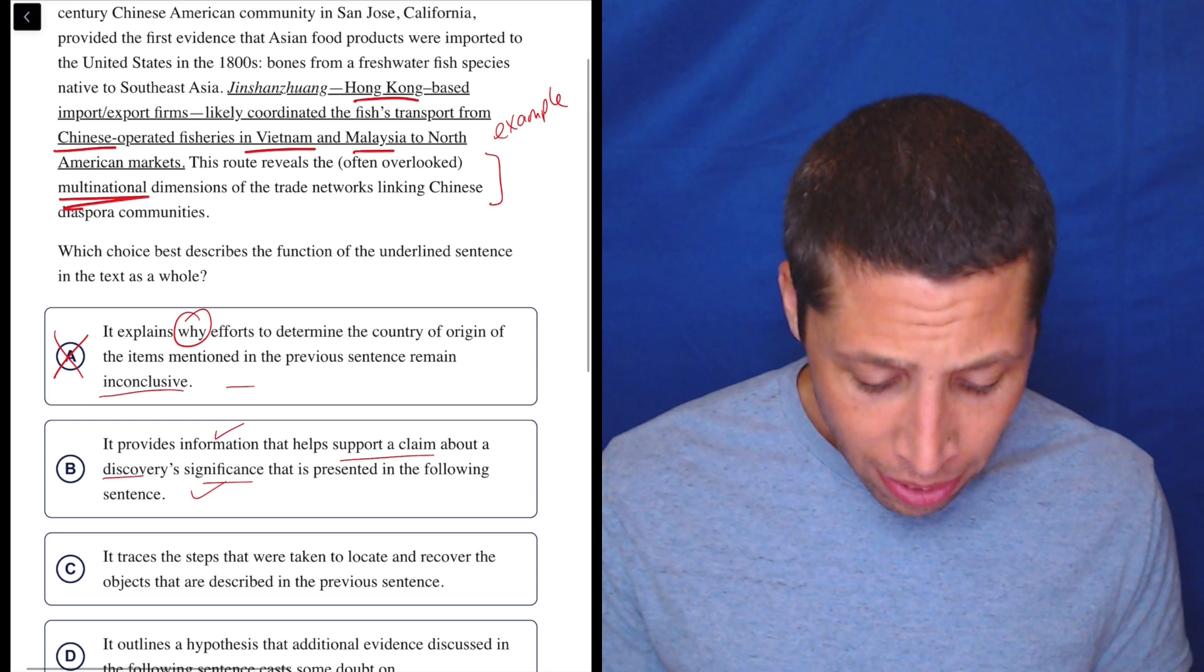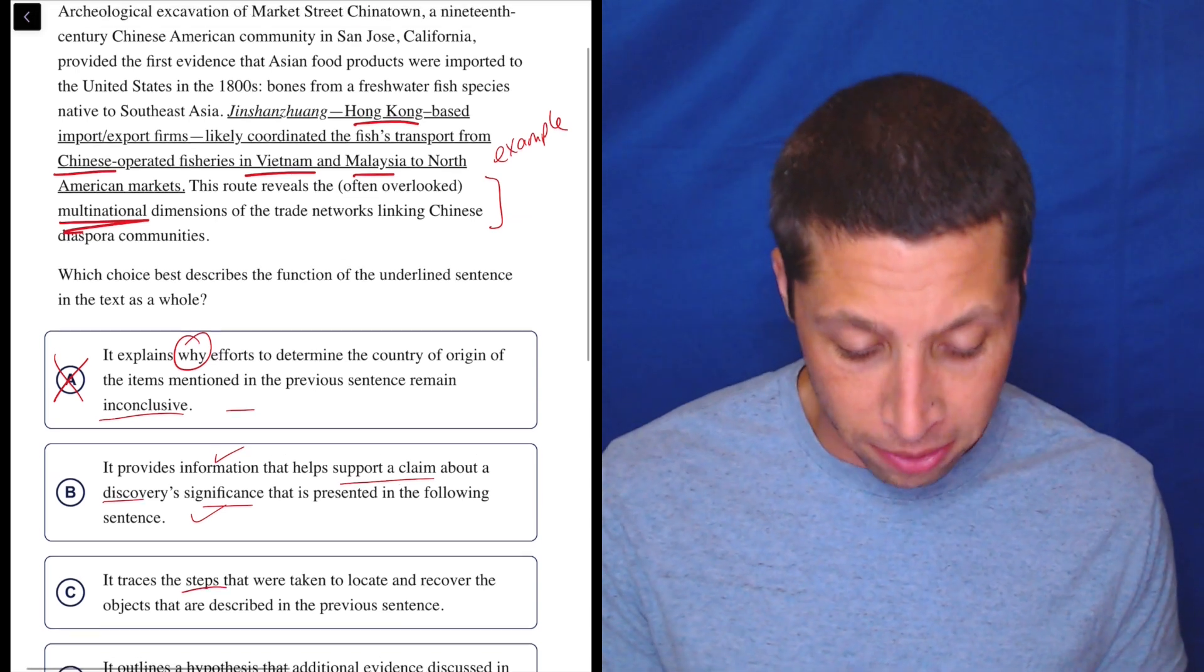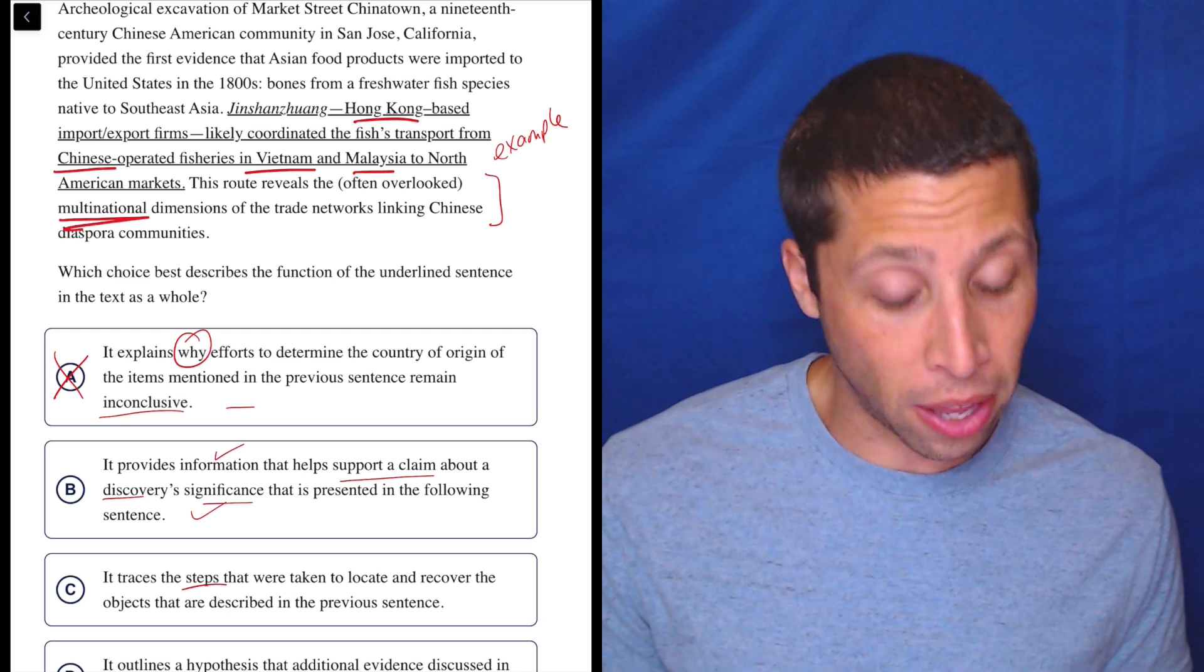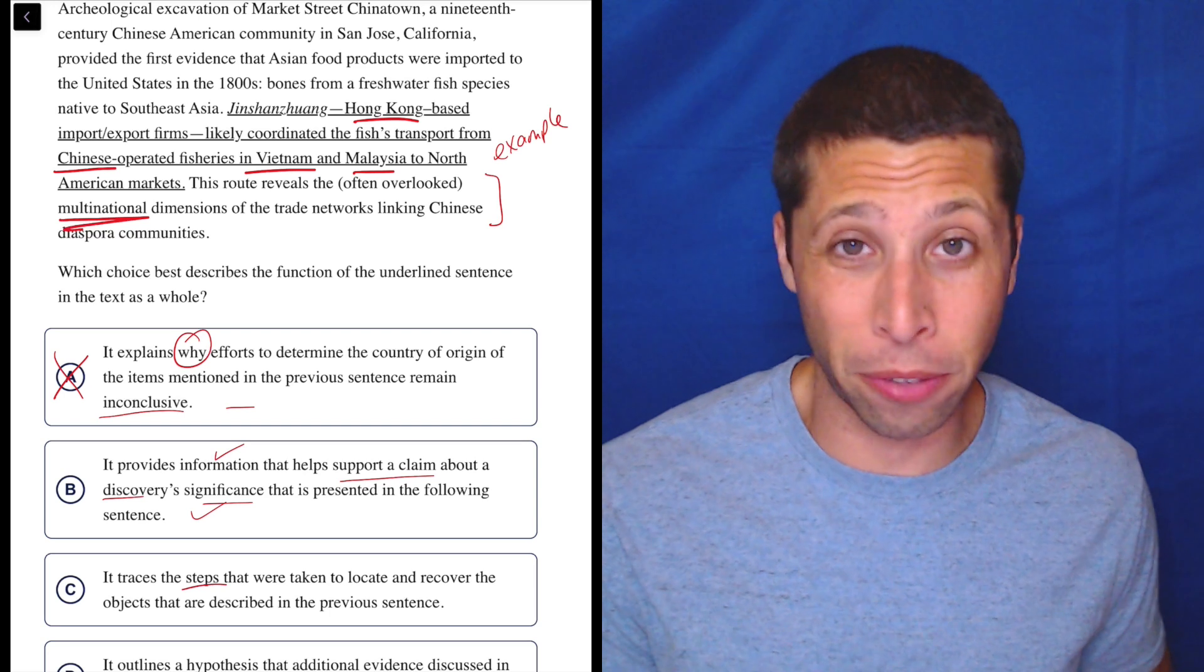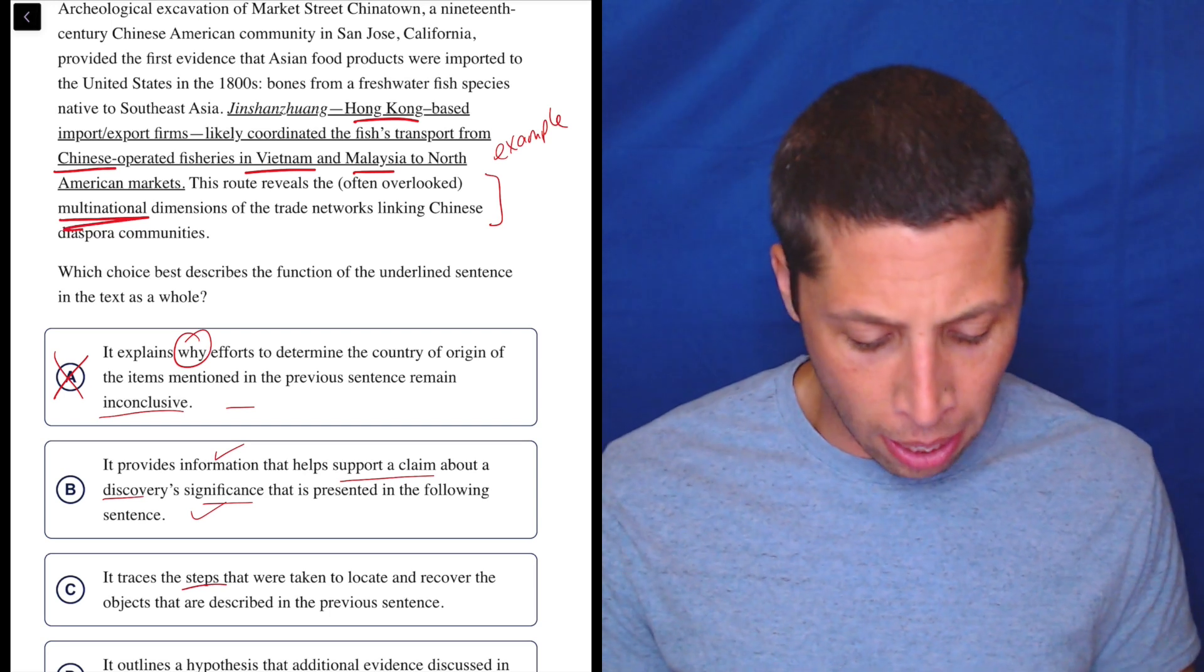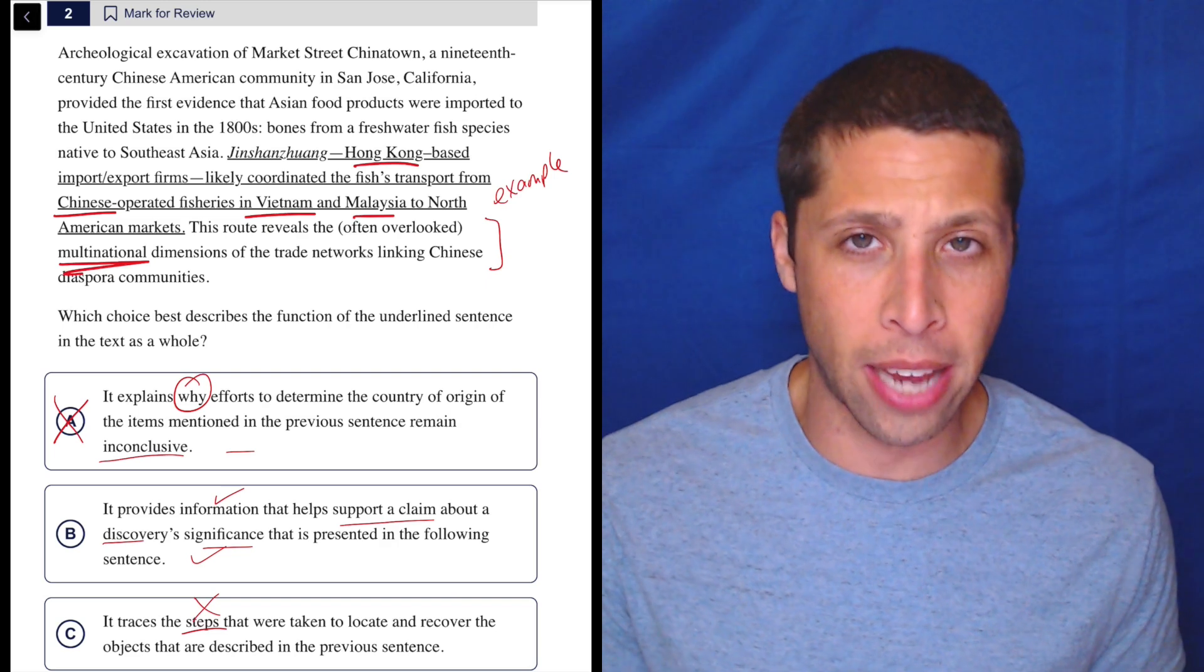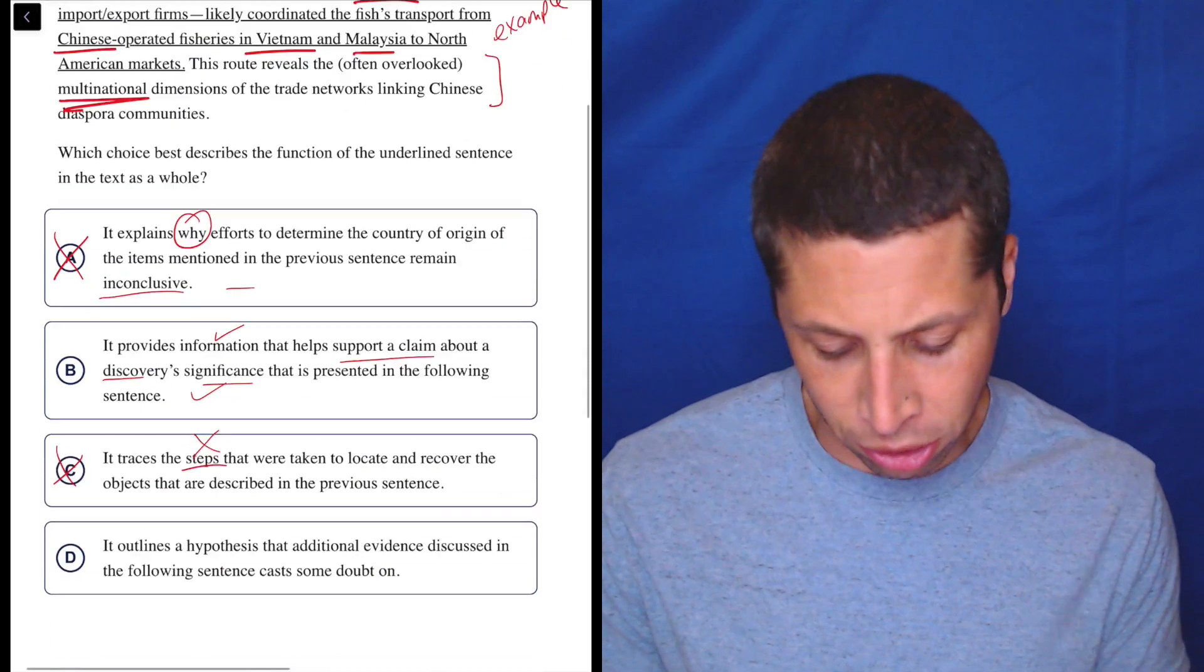Let's look at C. Let's see if it's any better. It traces the steps, that already bothers me, that were taken to locate and recover the objects that are described in the previous sentence. So the objects are, I guess, the bones. So what were the steps that they took to locate them? These are not steps that they used to find them. Maybe this is a kind of step that they used to get there in the first place, is they went through this fishery or these transport firms. But I don't have any steps that I can see that they're using to recover these things. They dug them up, I guess, in Market Street, Chinatown. But I don't have any steps about how they excavated or where they dug or anything like that. So this just seems wrong.